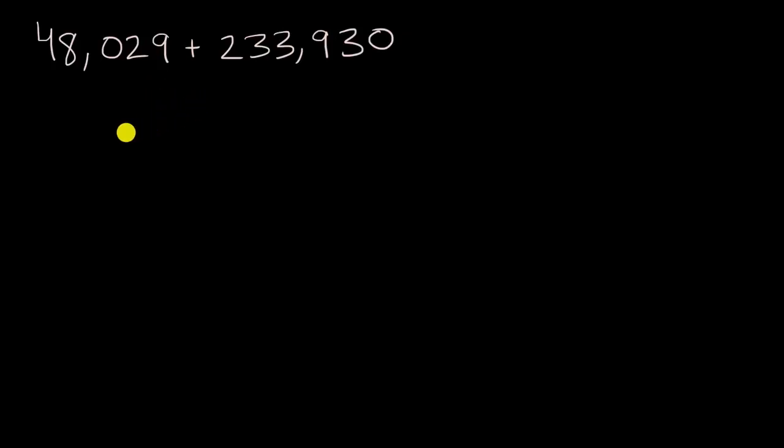Alright, so the way I'm going to tackle this—I assume you've had a go at it—I'm going to take the larger number and write it on top. I'm doing the standard method. There are multiple ways to add multi-digit numbers, but I'm going to use the most typical method. Then I'm going to write the smaller number below it, matching up the place values.